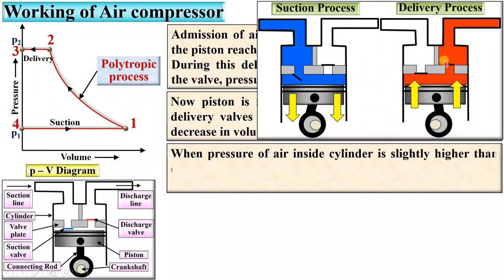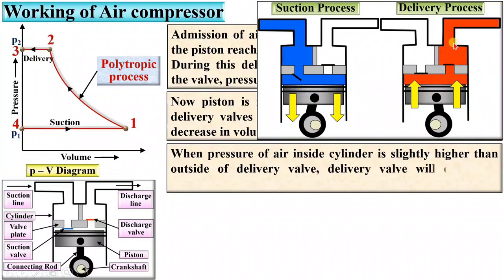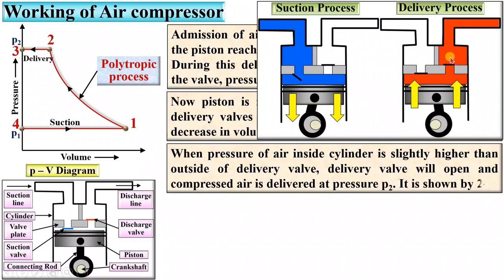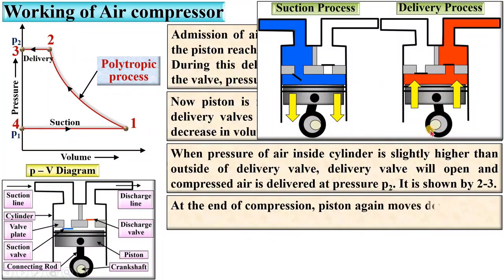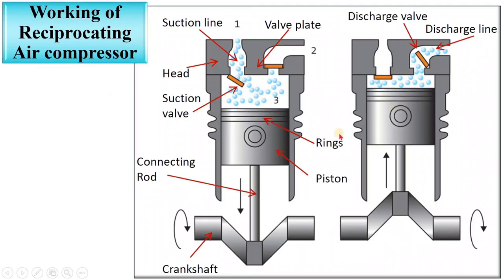When pressure of the air inside the cylinder is slightly higher than outside the delivery valve, the delivery valve will open and compressed air is delivered at pressure P2 — shown by the 2-3 line. That is why it is called the delivery process. At the end of compression the piston again moves down and the cycle is repeated: 4-1, then 1-2, 2-3, and 3-4 again. The air is compressed due to the decreasing volume.